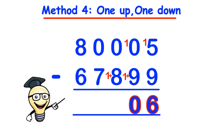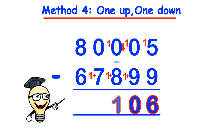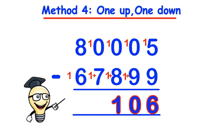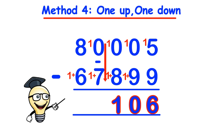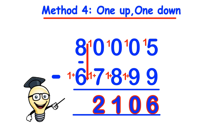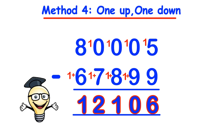Moving to the next column: 0 take away 9 cannot be done, so 1 up — making 10 — and 1 down in the next column: 1 plus 7 makes 8. So 10 take away 9 is 1, which we put in the answer line. Then 0 take away 8 cannot be done, so 1 up and 1 down: 1 plus 6 equals 7. So 10 take away 8 equals 2. Finally, 8 take away 7 equals 1. So the answer is 12,106.